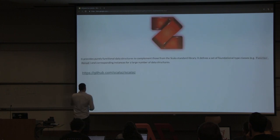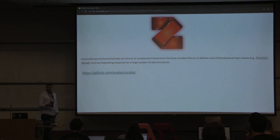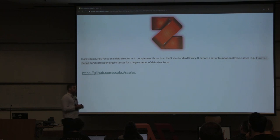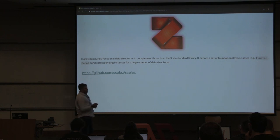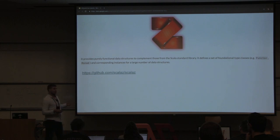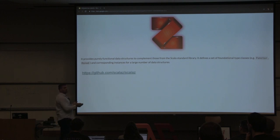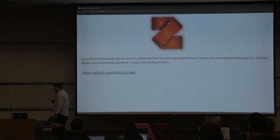The first library we're going to talk about is ScalaZ. An alternative in the Scala world would be Cats. They both provide foundational type classes like Functor and Monad, and also a large number of data structures that remove the escape hatches that come in the Scala standard library. These data structures constrain you more into the pure subset of Scala that we're going to try to keep using.